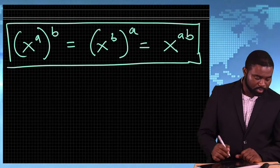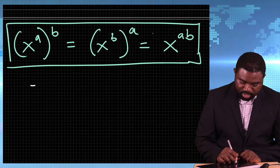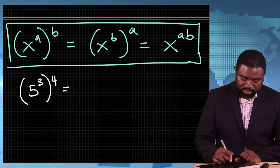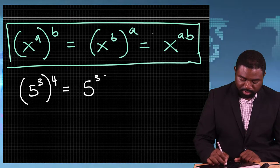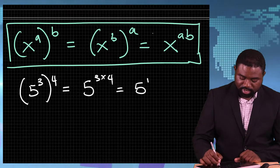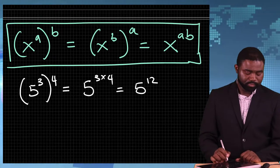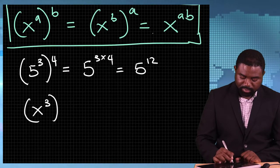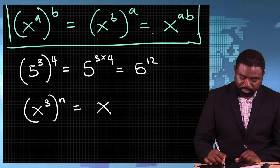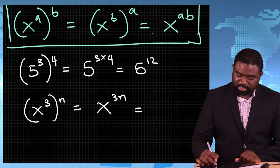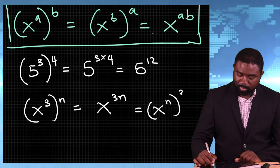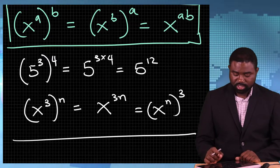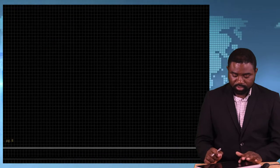Let me give an example. If you have 5 raised to the power 3, all raised to the power 4, this is the same as 5 raised to the power 3 multiplied by 4, which is 5 raised to the power 12. Similarly, if you have x raised to the power 3, all raised to the power n, this is the same as x raised to the power 3n, which can also be written as x raised to the power n, all raised to the power 3.